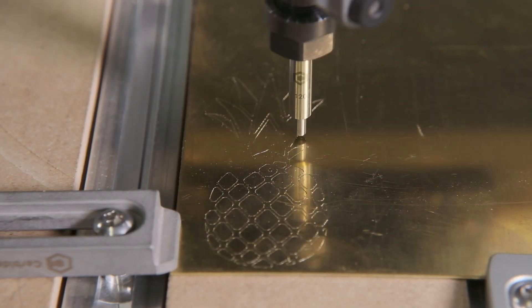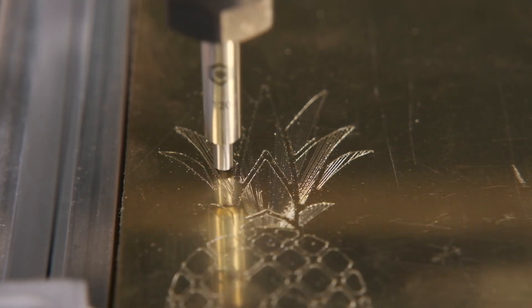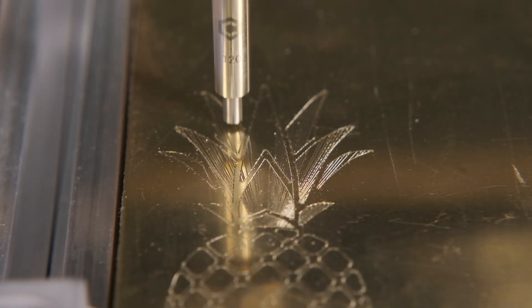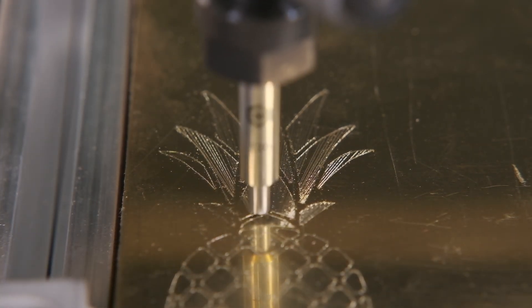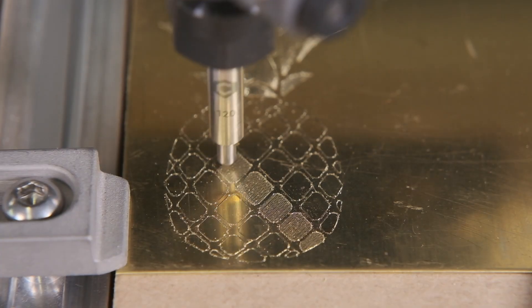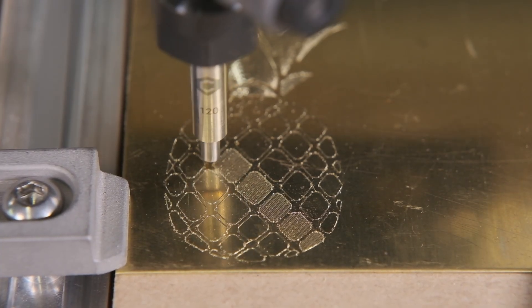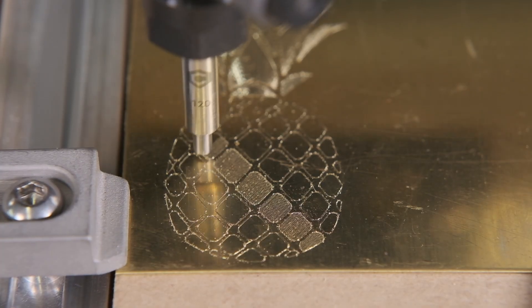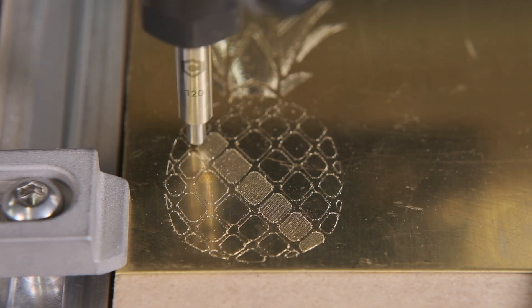A couple things to note before using non-rotating engravers in our CNCs. Number one, a drag engraver does not need to rotate to engrave material. Instead, the high pressure at the fine point of the tip gently scores the surface. If you are using a drag engraver on the Shapeoko, make sure you do not turn the router on when you run a program with MC Etcher installed.